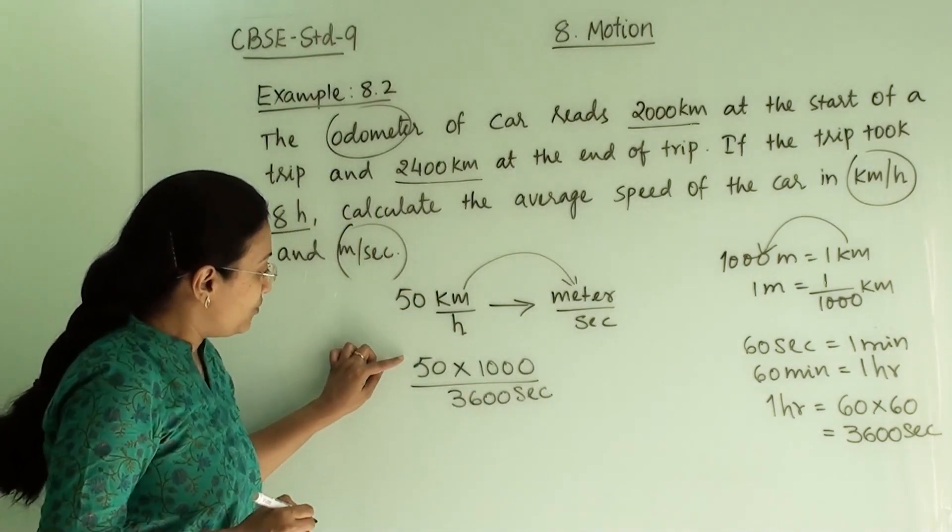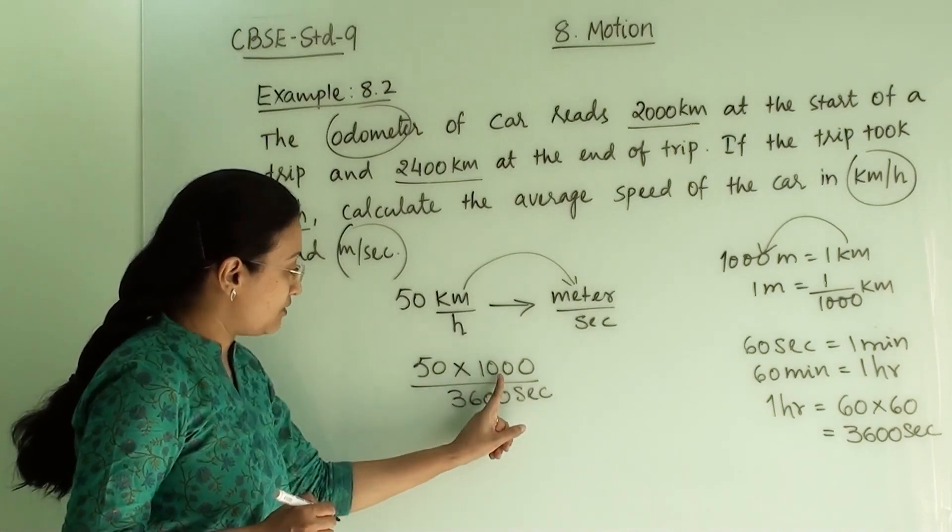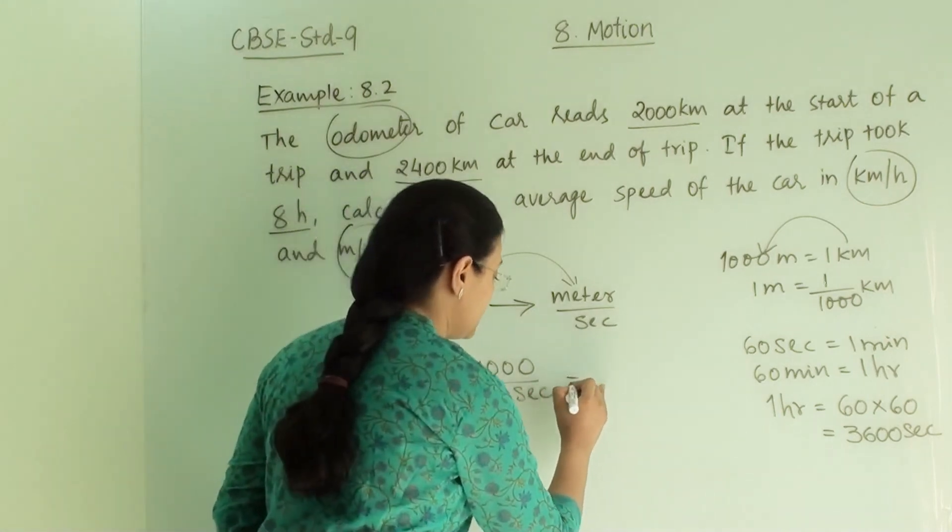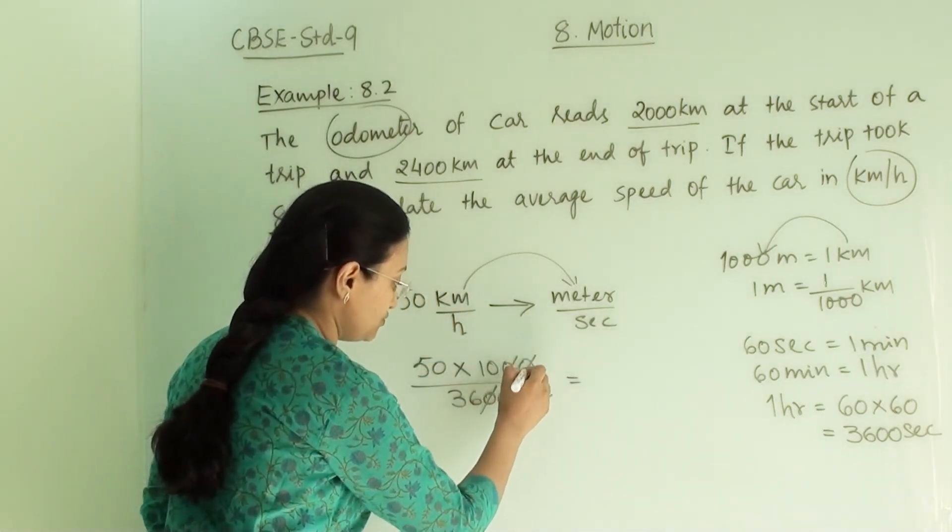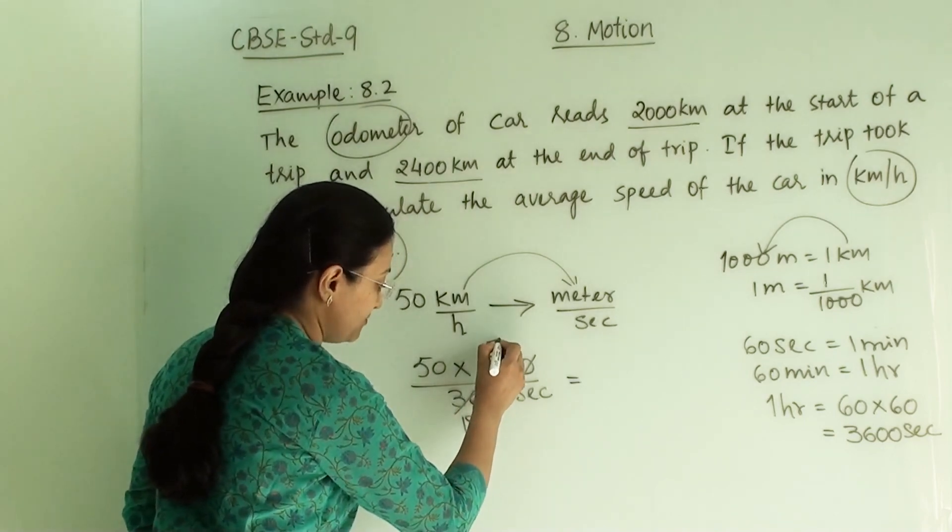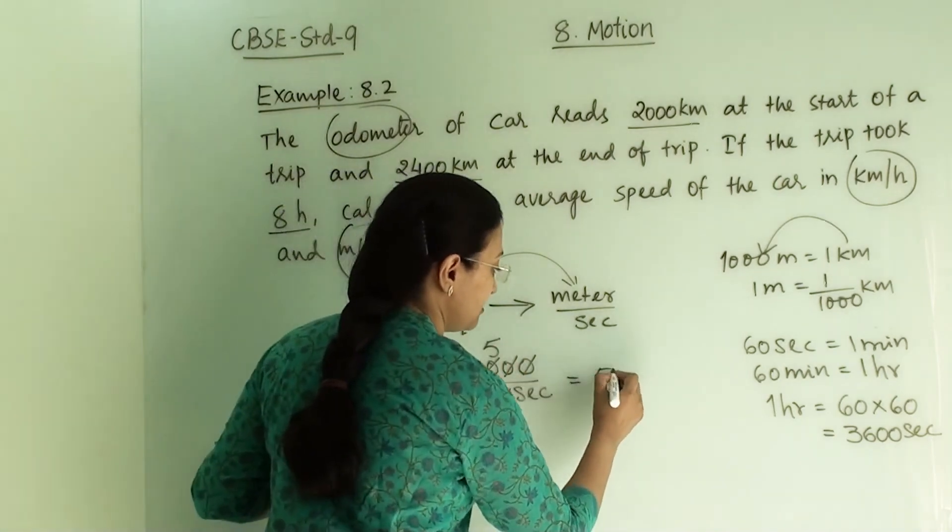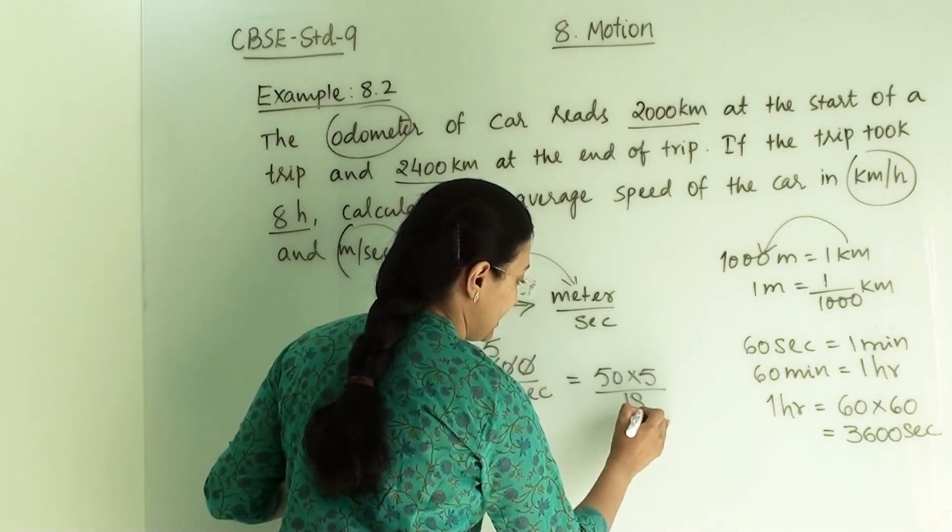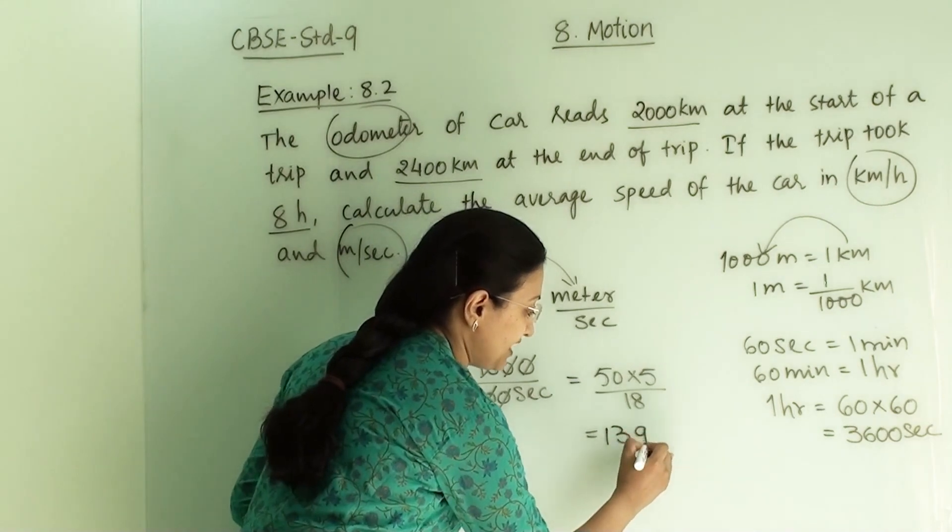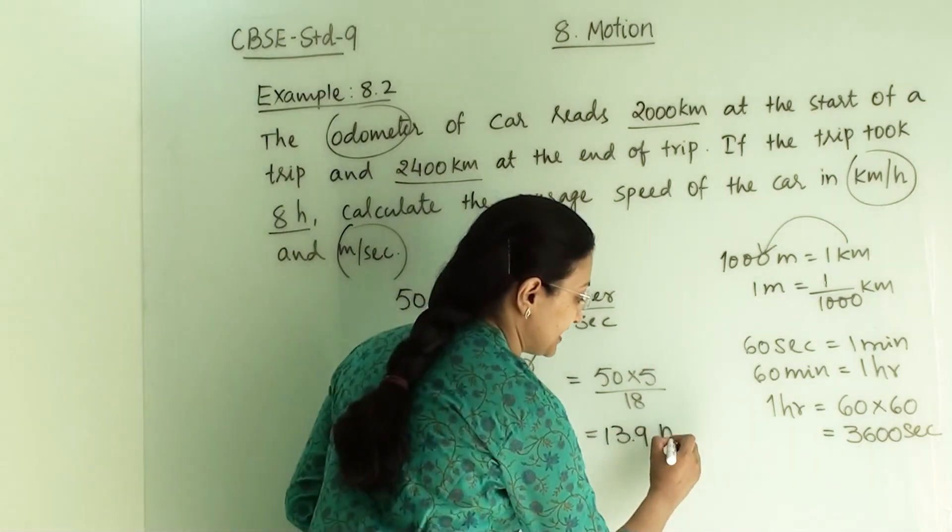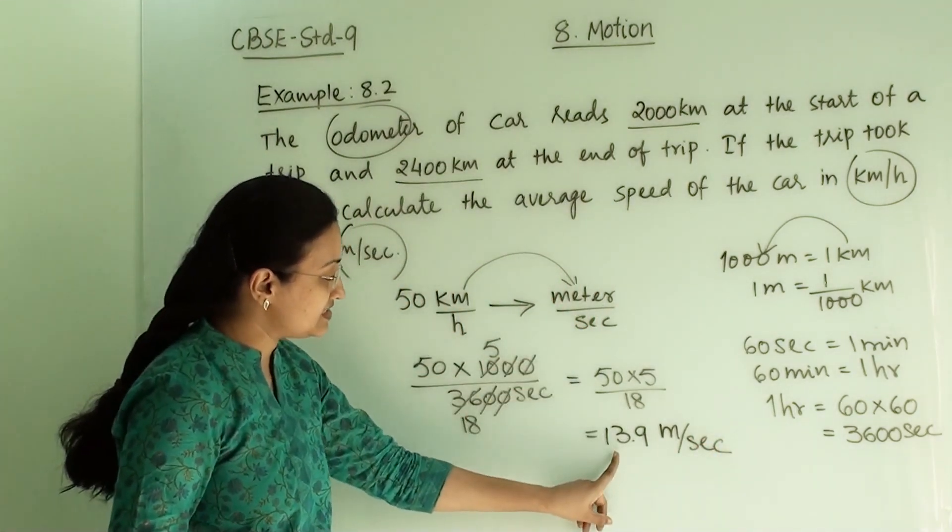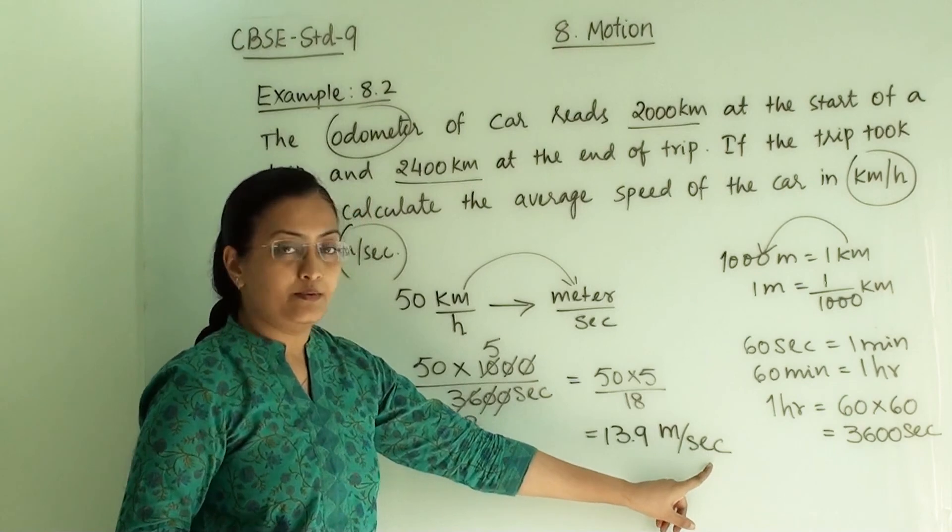Now we have to solve this: 50 into 1000 divided by 3600 second. The 000 will cancel. Here we will get 18, here we will get 5, and 50 into 5 divided by 18 will be 13.9 meter per second.